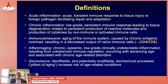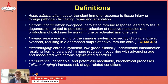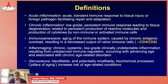I'd like to briefly go over a few definitions because we'll be using these terms. Acute inflammation is an acute transient immune response to tissue injury or foreign pathogen, which facilitates repair and adaptation. Chronic inflammation refers to a low-grade persistent immune response leading to tissue degeneration, related to persistent production of reactive molecules and cytokines by non-immune or activated immune cells.